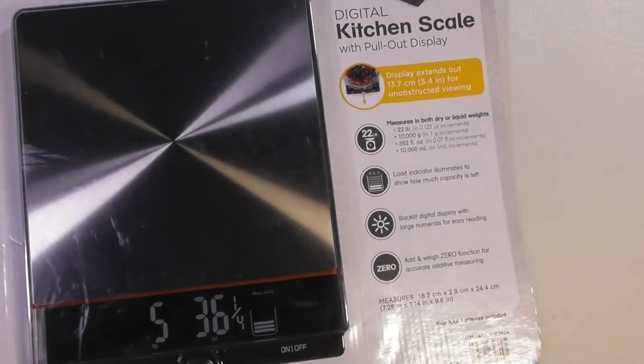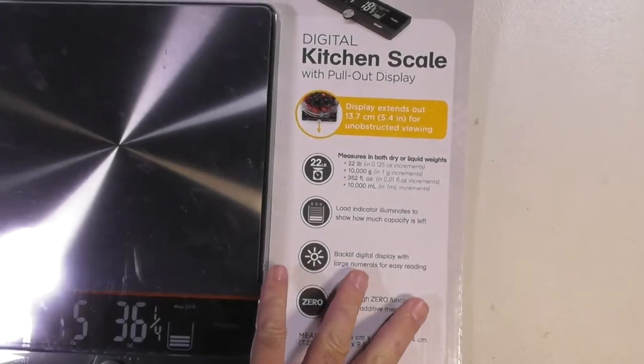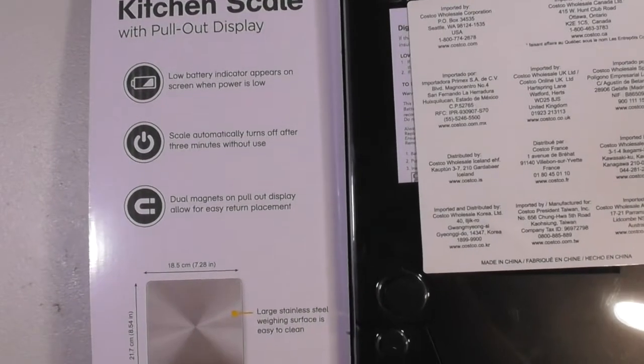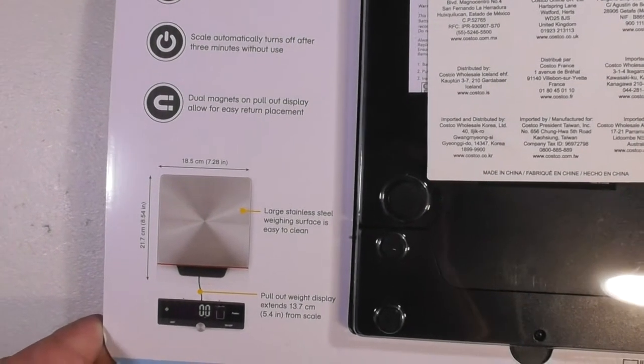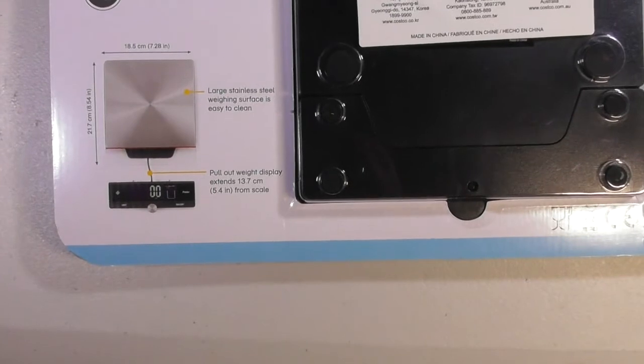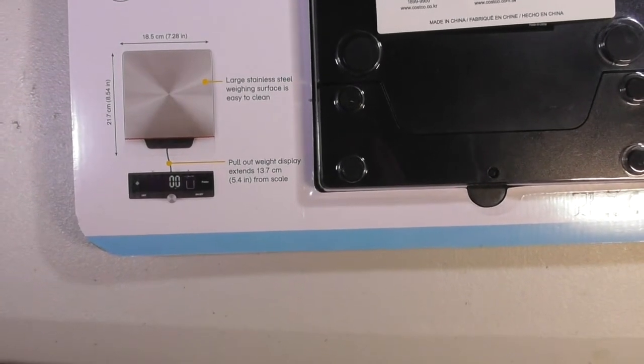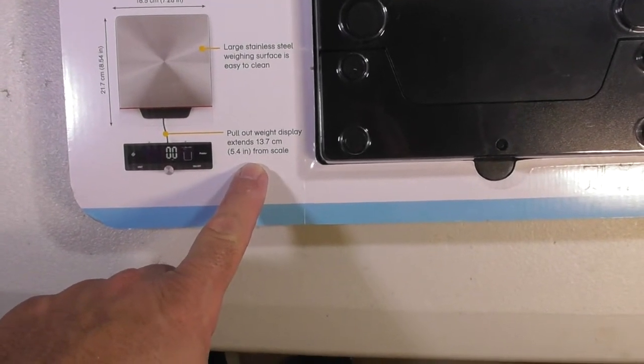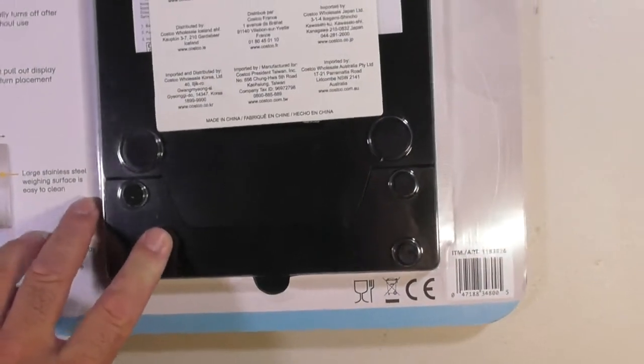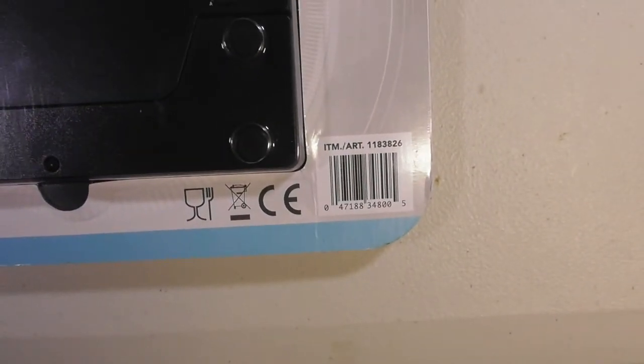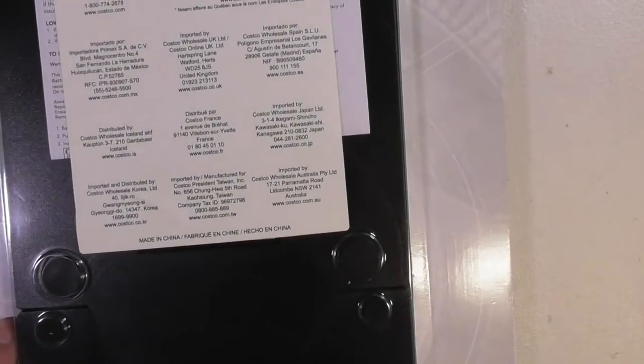This thing is definitely large. Display extends out 5.4 inches. Low battery indicator automatically turns off after three minutes without use. Dual magnets on pull out display allow for easy return placement. Large stainless steel weighing surface is easy to clean. Pull out weight display extends almost 5.5 inches from the scale. There's the battery compartment over here. Let me take this out of the package.